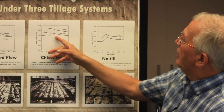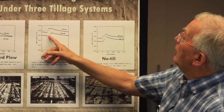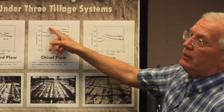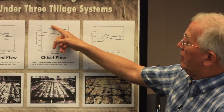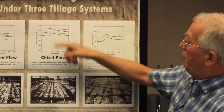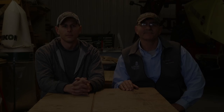The chisel plow, we can see, is somewhat in between. But here, we're talking about getting saturated — we're getting ponding occurring, and there is a delay.